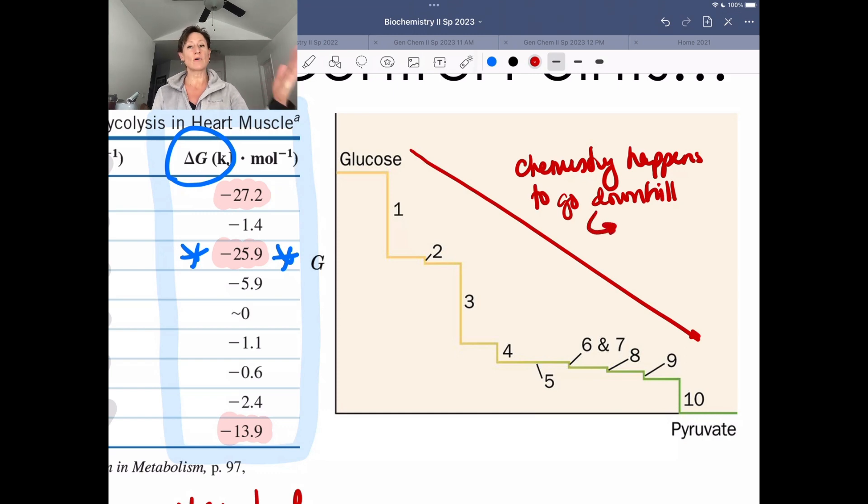Okay. And we know this. We're going downhill energetically. That's why we're able to generate 2 ATP. So we generate 2 ATP and also 2 NADH, right? That's a high energy molecule. It's an alternative currency. So we see these as we go through glycolysis from glucose to pyruvate.